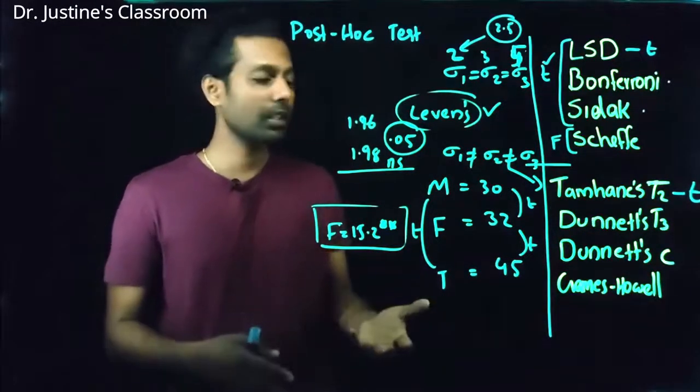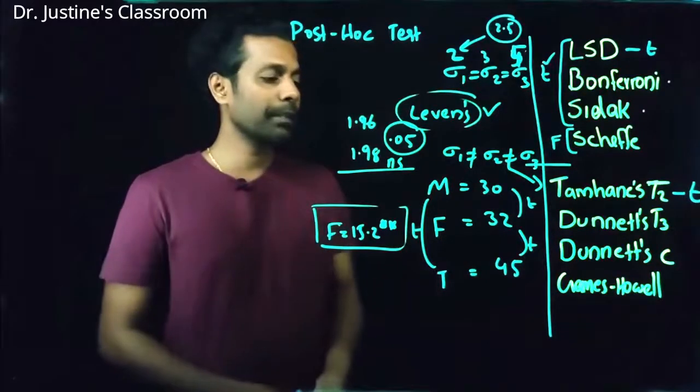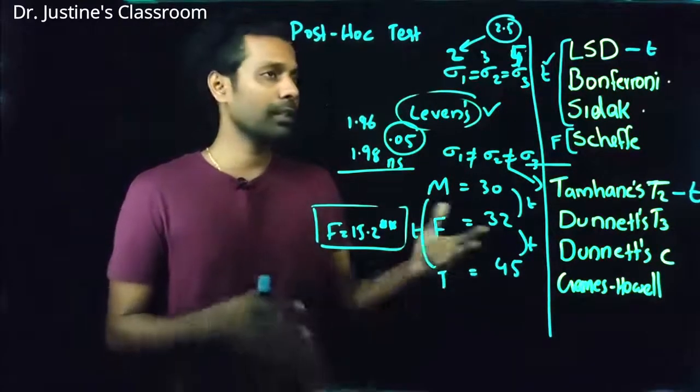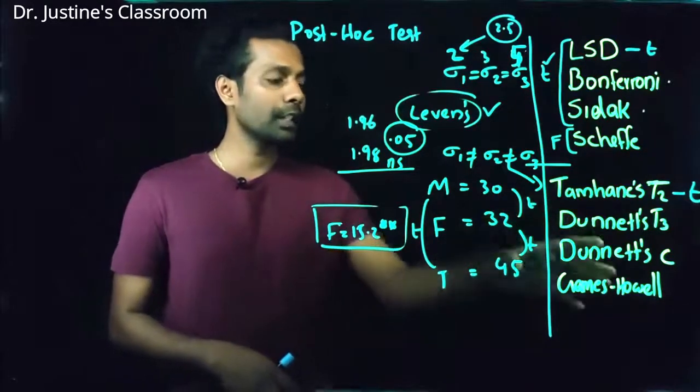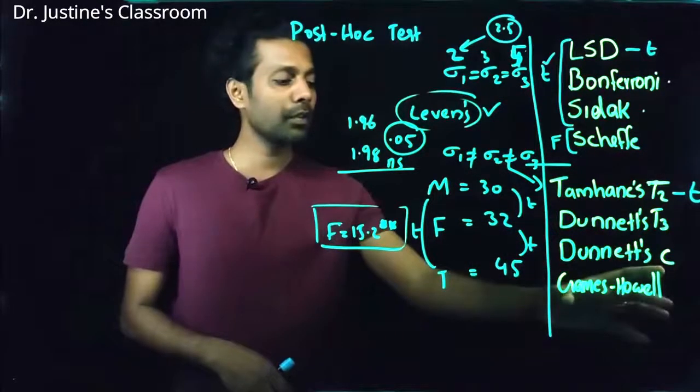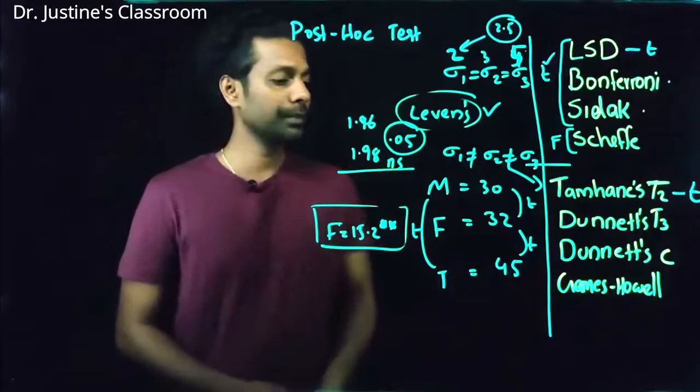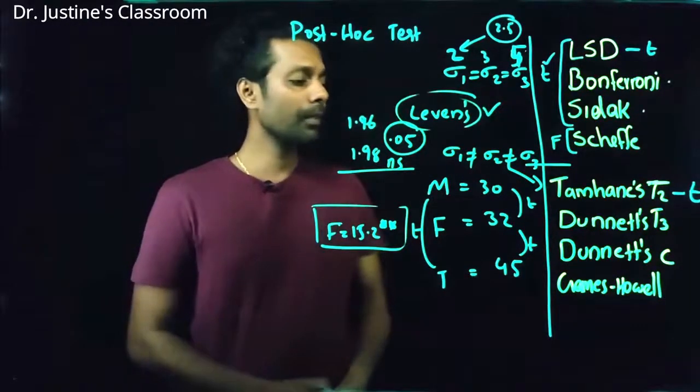Then Games-Howell test, this is based on studentized range, another kind of scoring pattern, distribution pattern. So studentized range scores are generally used in this particular Games-Howell kind of correction method, post-hoc analysis.